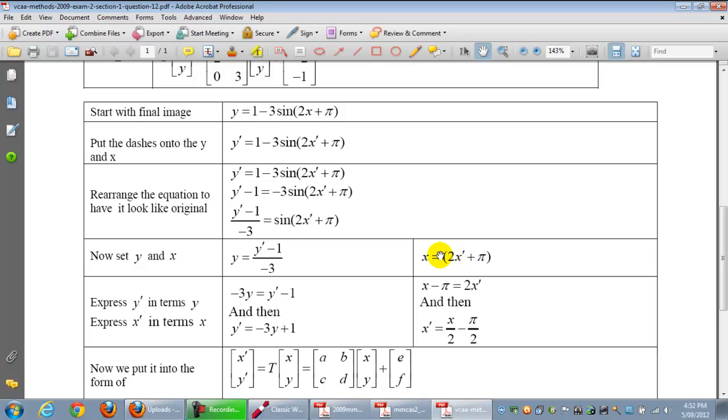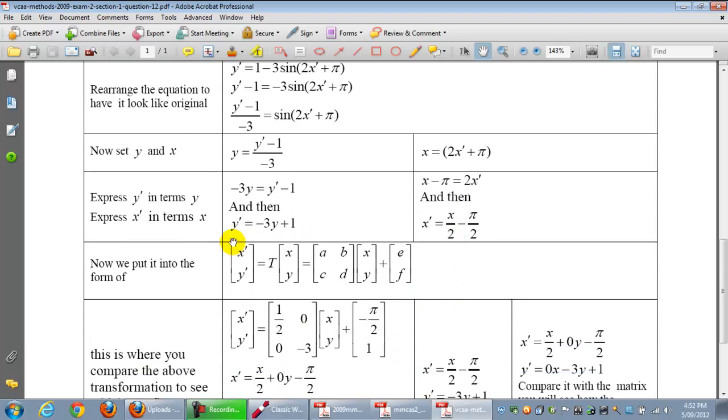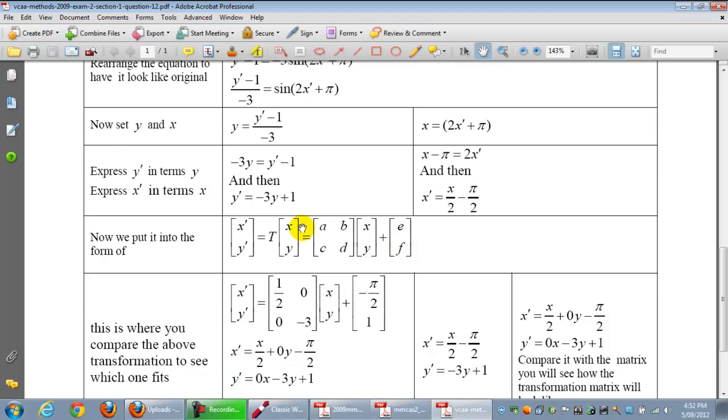This is our normal form for a transformation. So it's T(x, y) which equals something we don't know times (x, y) plus (e, f).